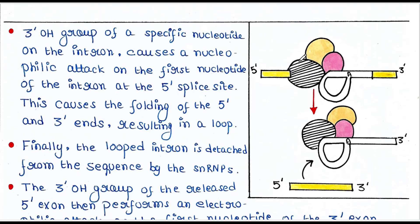Now, the 3' OH group of a specific nucleotide on the intron causes a nucleophilic attack on the first nucleotide of the intron at the 5' splice site. Here you have the 5' splice site. The 3' OH group of a specific nucleotide attacks the first nucleotide of the intron at the 5' splice site, and this causes the folding of the 5' and 3' ends, resulting in a loop just like this.